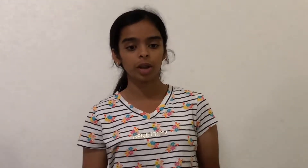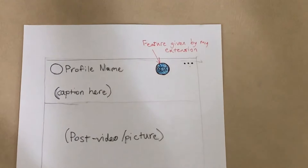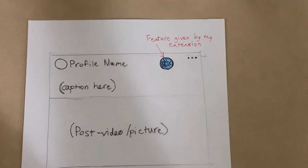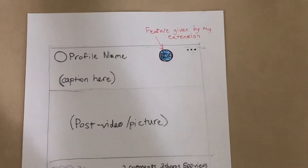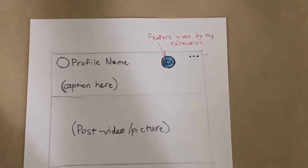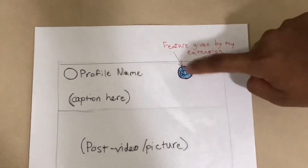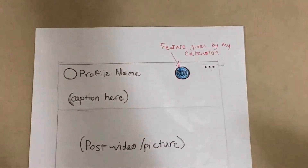It then searches for these keywords, faces, and sources using the extension's database in order to determine if the post is fake or true. Based on how valid the post is, or how well it meets the information in the database, the post is given a credibility percentage which is displayed next to the post for all viewers to see.